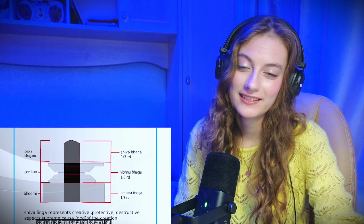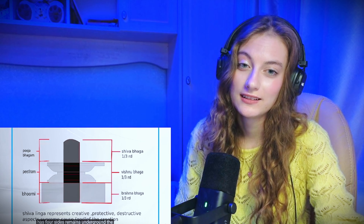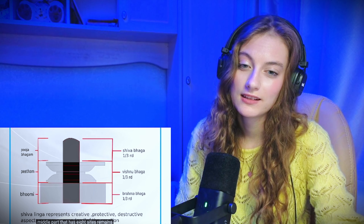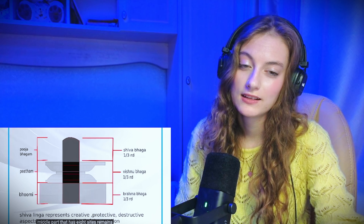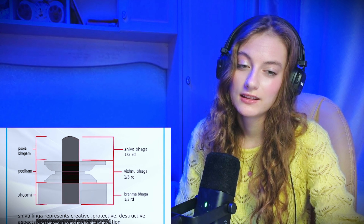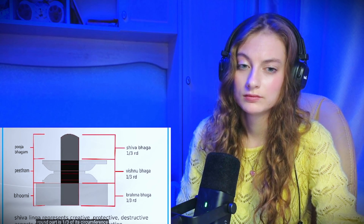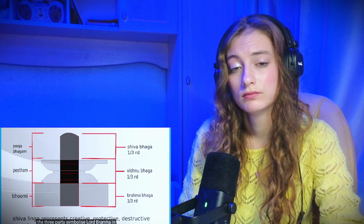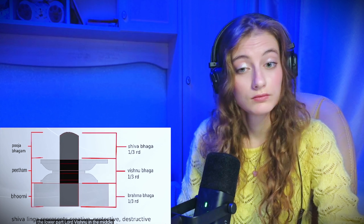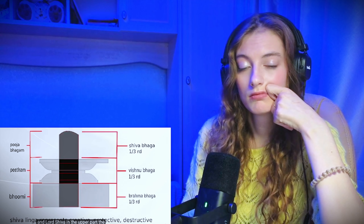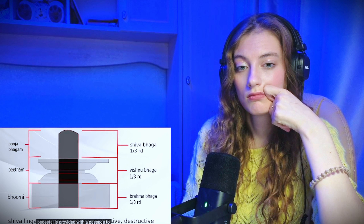A lingam is just a symbol to identify something. The shivling has a scientific explanation. It consists of three parts: the bottom with four sides remains underground, the middle part with eight sides rests on a pedestal, and the top which is actually worshipped is round. The height of the round part is one third of its circumference. The three parts symbolize Lord Brahma in the lower part, Lord Vishnu in the middle, and Lord Shiva in the upper part. The pedestal is provided with a passage to drain the water poured on top.